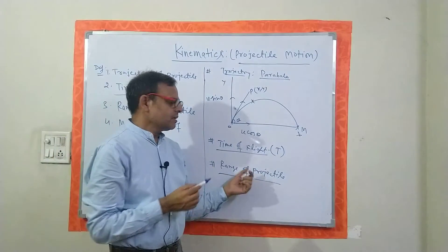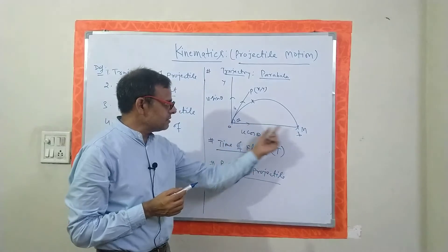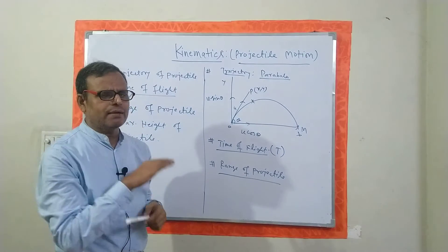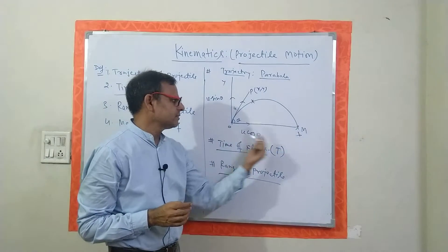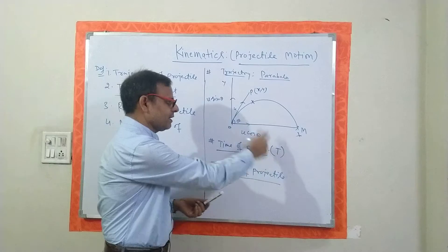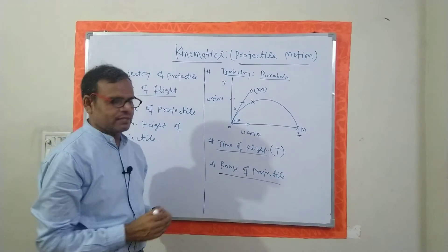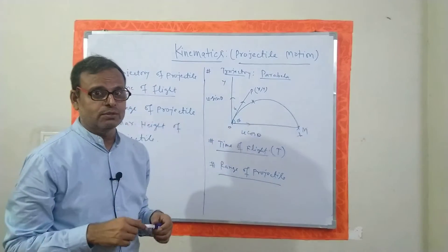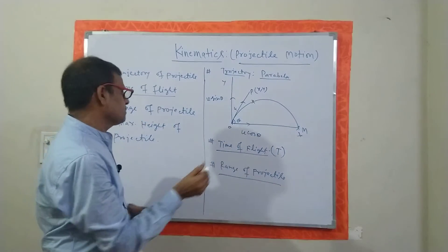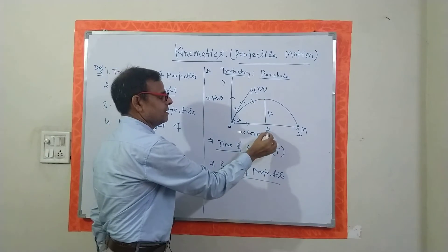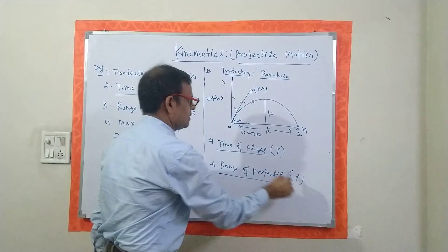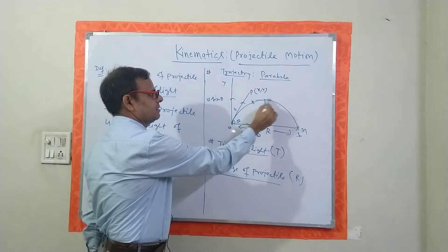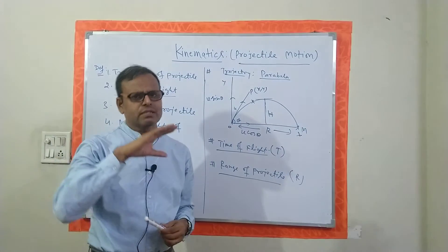The third term is range of projectile — a very interesting keyword. The horizontal length OM is the range. The range of a projectile is the total horizontal distance covered by the projectile during its time of flight. The maximum value of range will be discussed in my next video. Now the fourth term: maximum height of the projectile. The range is denoted by R, and the maximum height is denoted by H. This is the maximum height reached by the projectile.